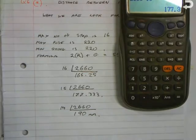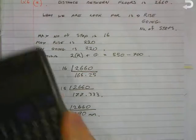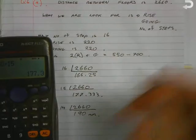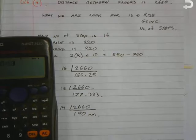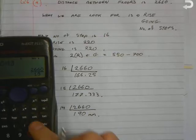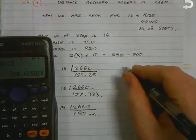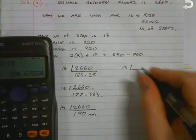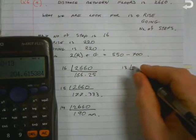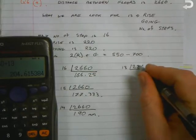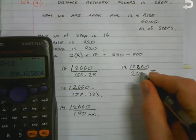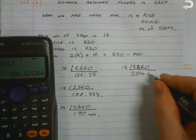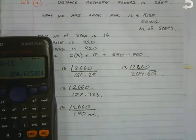What we might do is continue on and then maybe put in 2660 and divide it by 13. So if we divide it by 13, the measurement we're going to get is 204.615.